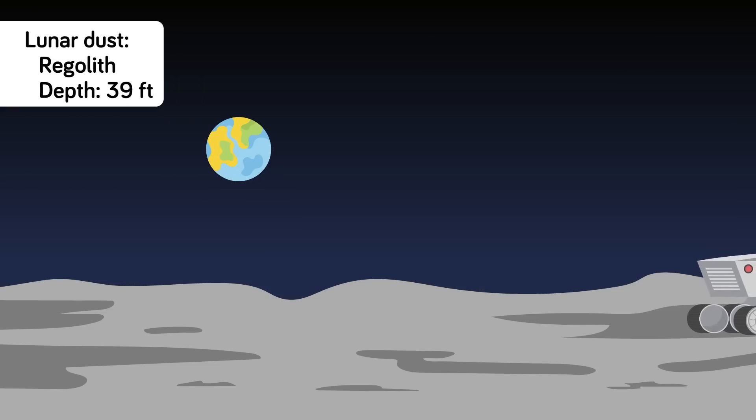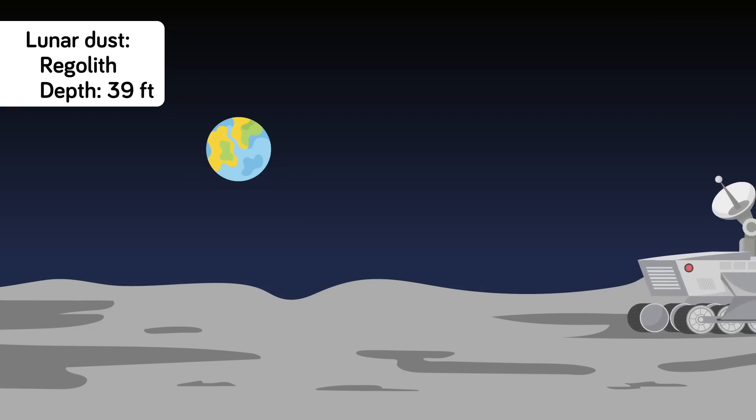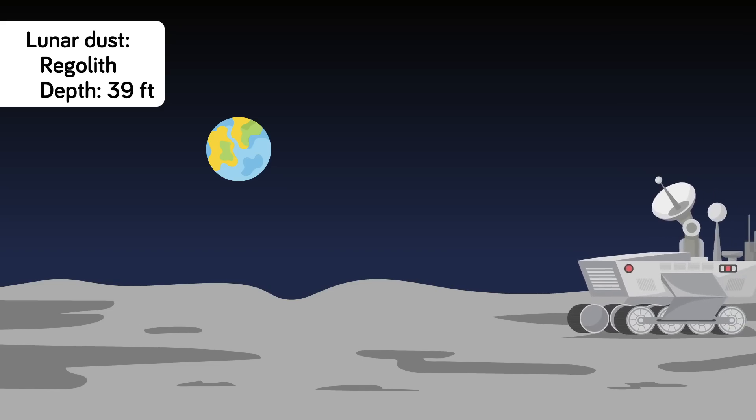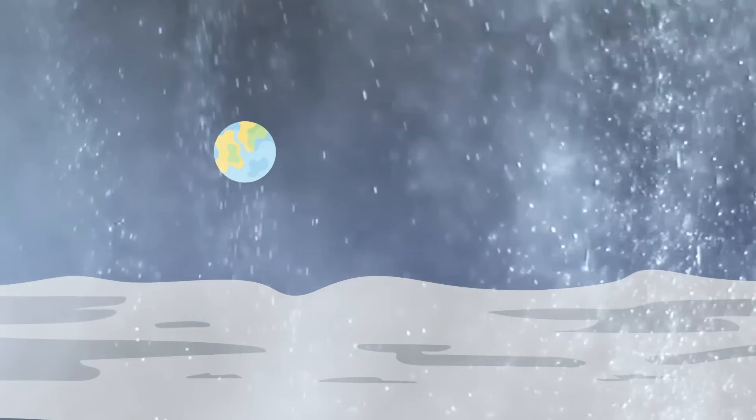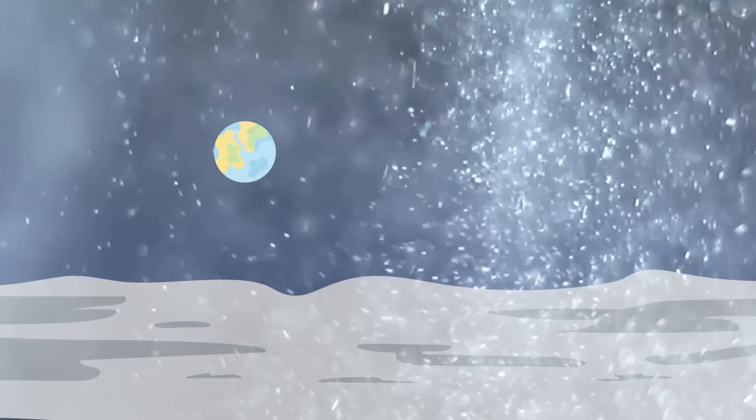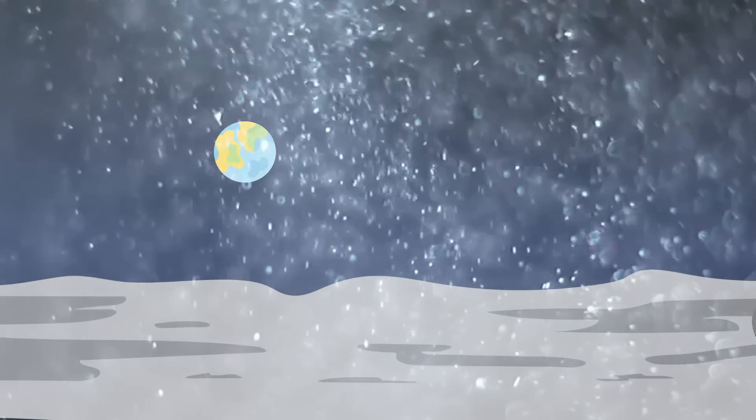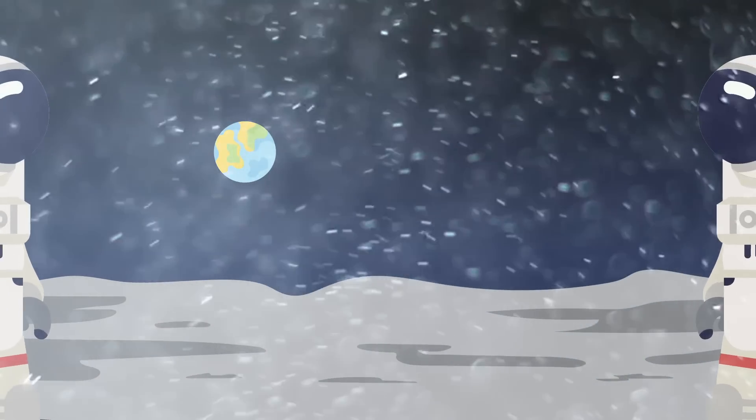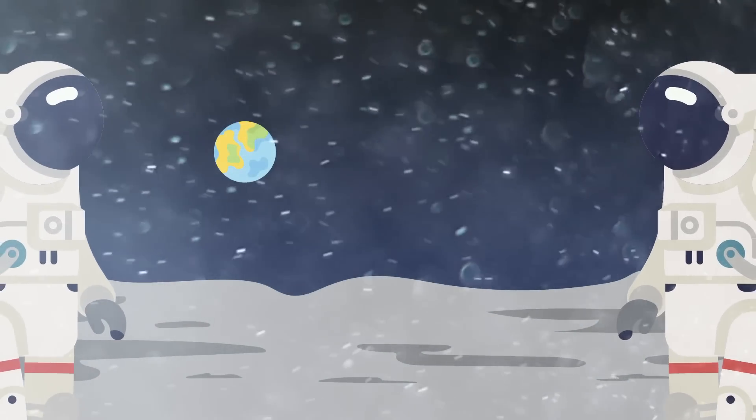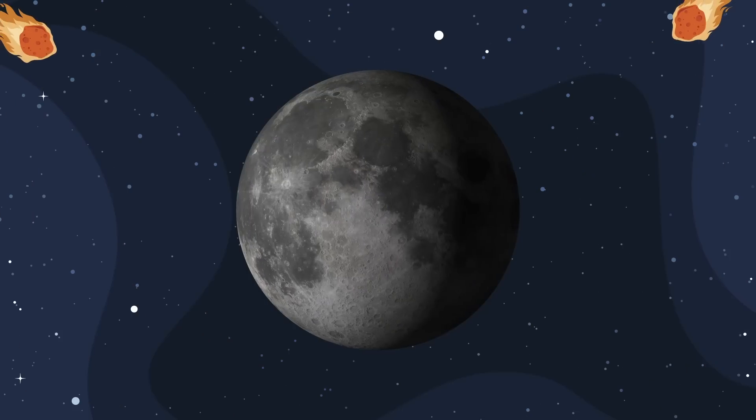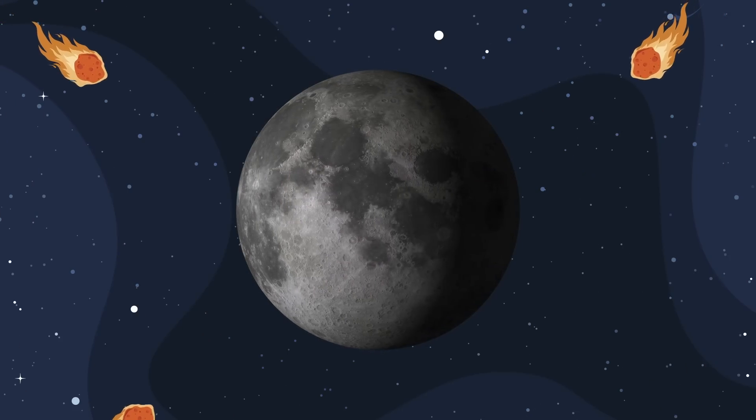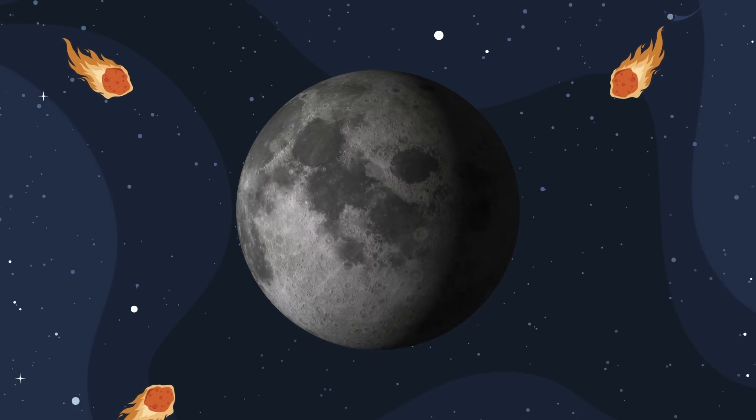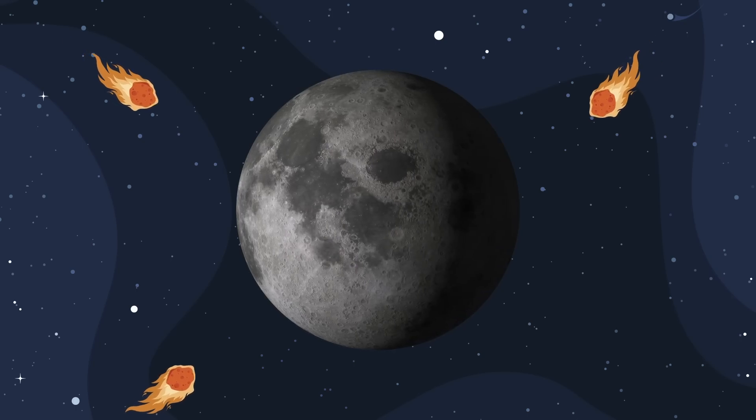The moon's dust is called regolith, and your team has discovered that it is thicker than previously thought. The spacecraft your team sent to the far side of the moon has measured the regolith at 39 feet deep. In the past, the dust caused problems to manned missions through clogging vents and reducing visibility. The dust itself came from pulverized rocks that settled on the lunar surface after billions of years of asteroid bombardment. You and your team have confirmed that this dust exists on the far side of the moon, and any future missions need to take into account the danger it poses.